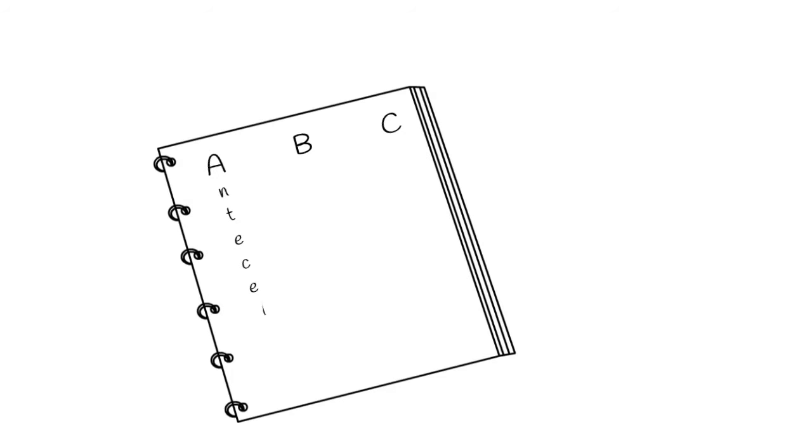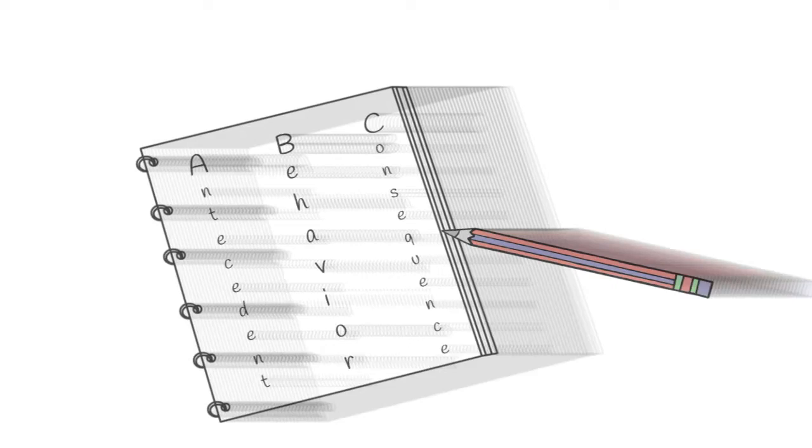She asks him to collect ABC data. The BCBA explains that the antecedent is what happens right before the behavior. The behavior is whatever Ethan does that we want to learn more about, and the consequence is what happens immediately after the behavior. She tells him not to get fancy or write too much. Just keep it simple.